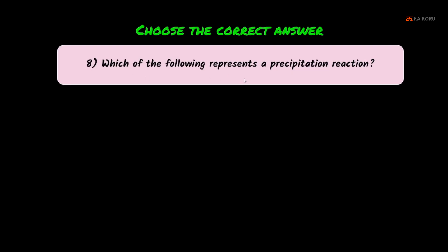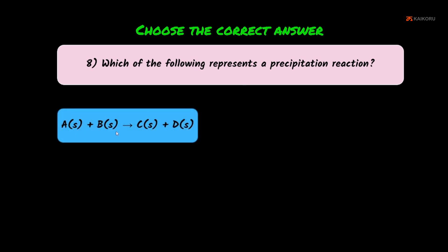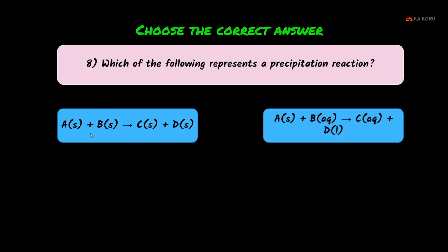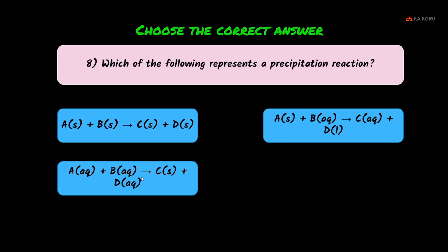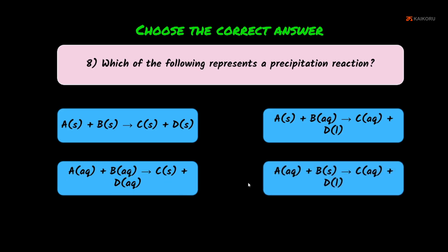Eighth question: which of the following represents a precipitation reaction? In a precipitation reaction, the reactants are in aqueous solution and produce a solid precipitate product. The answer is option C, where A(aq) + B(aq) → C↓ + D.